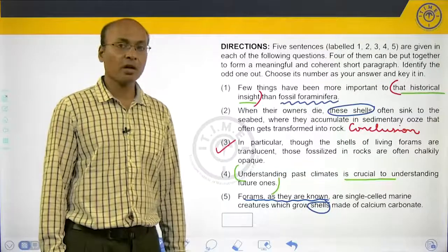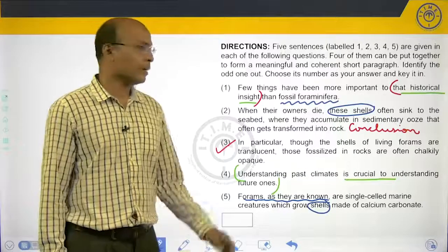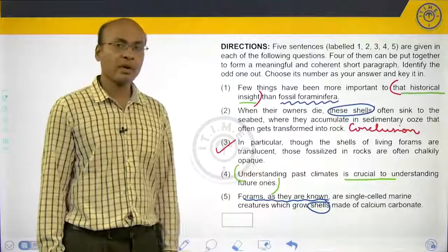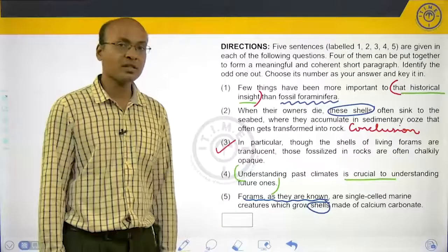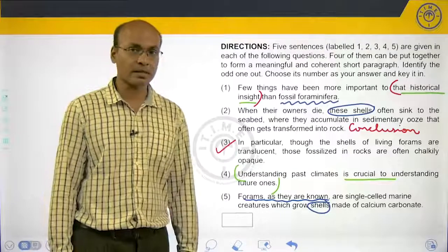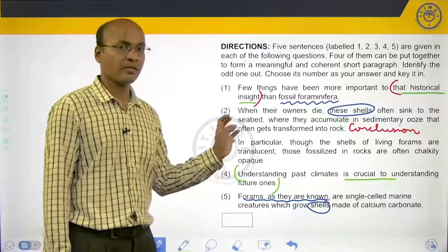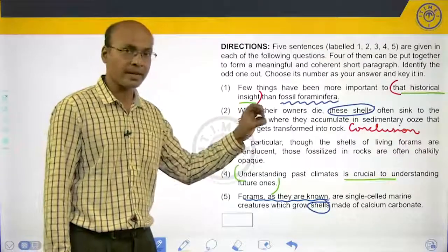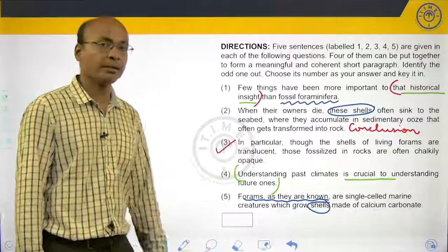Question number 27, this is the odd man out question. The strategy for solving odd man out questions is the same strategy that one needs to follow when solving para jumble questions. So we try to identify the starting sentence, we try to look for the conclusion sentence, we look for mandatory pairs of logical blocks.